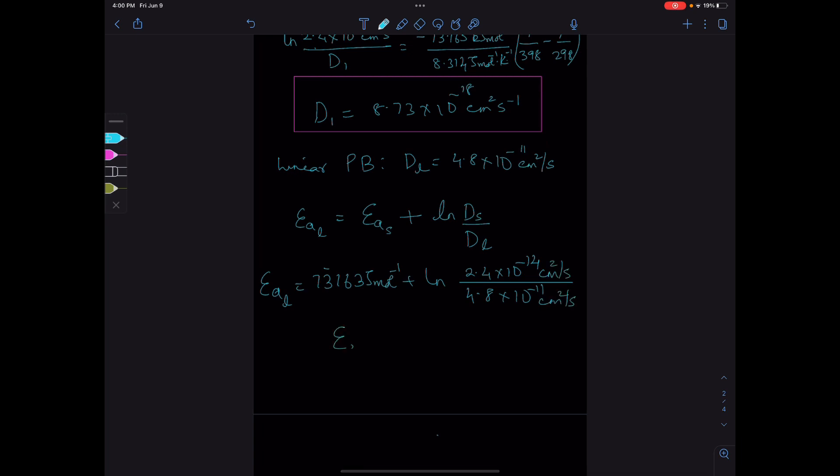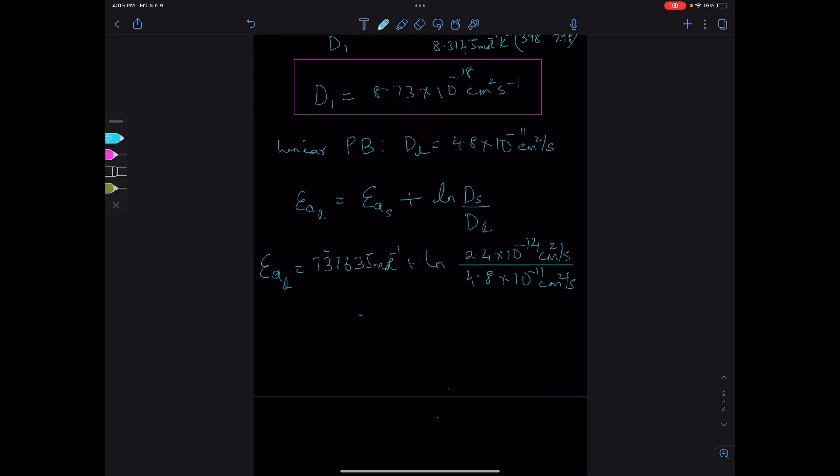This gives us an activation energy for the linear polymer of 48 kJ/mol.